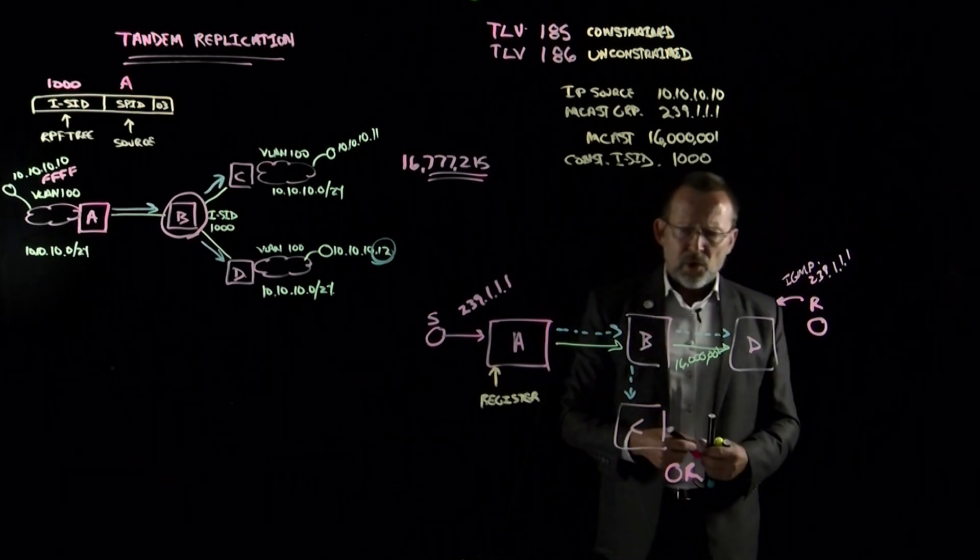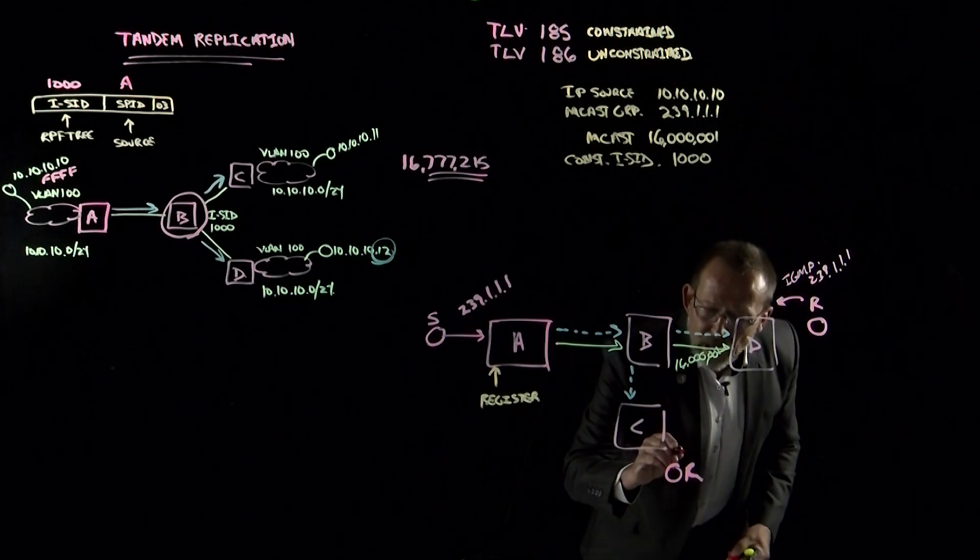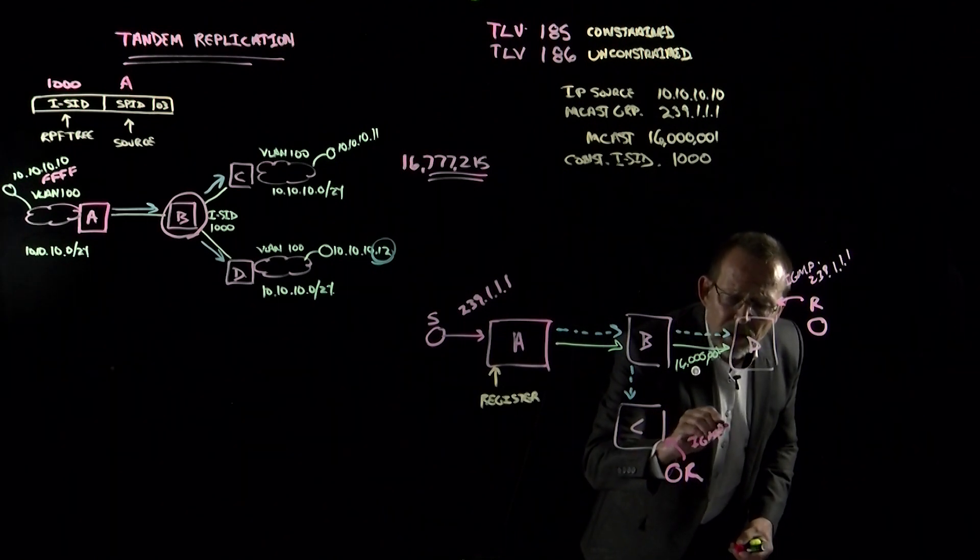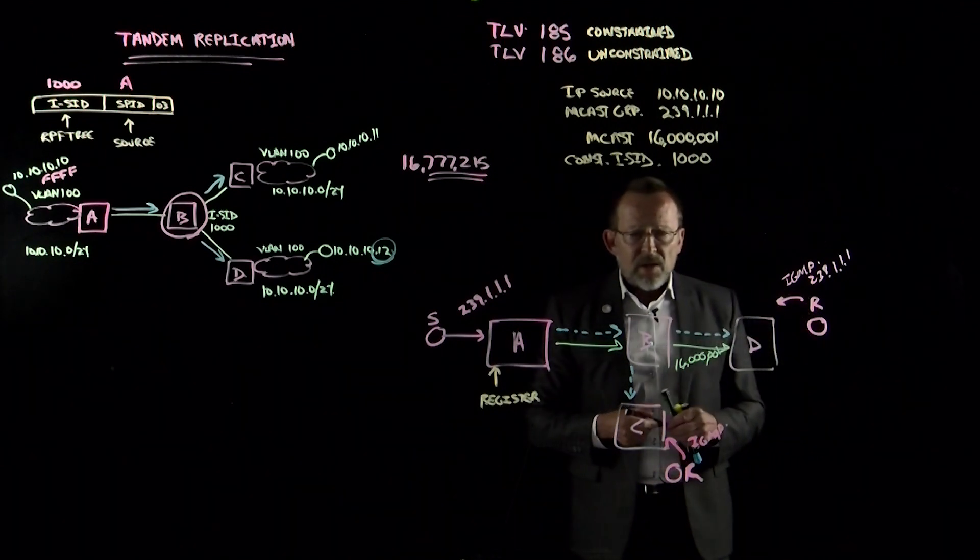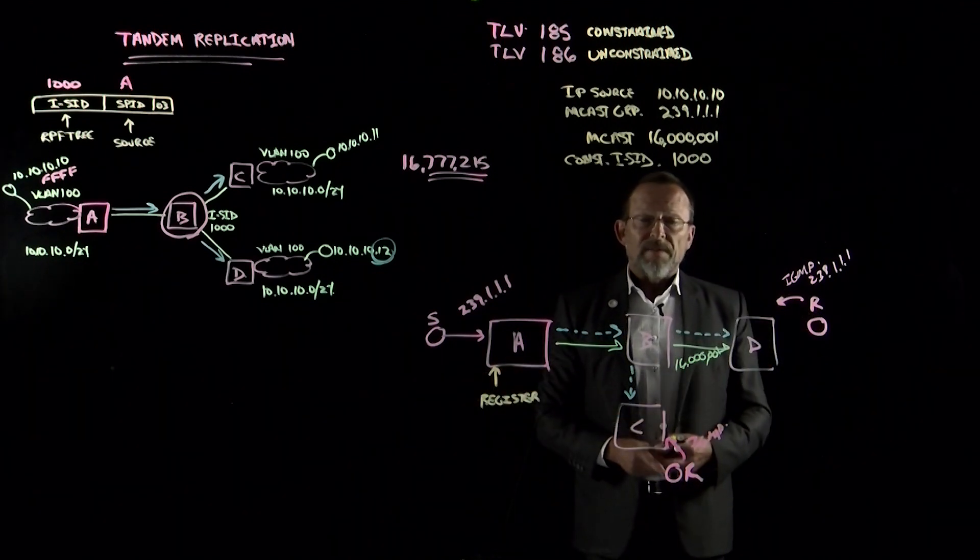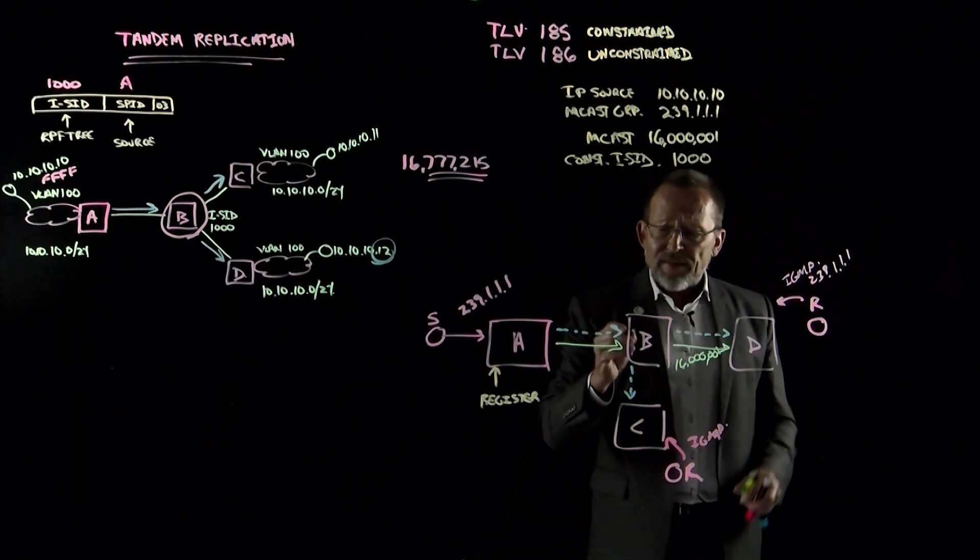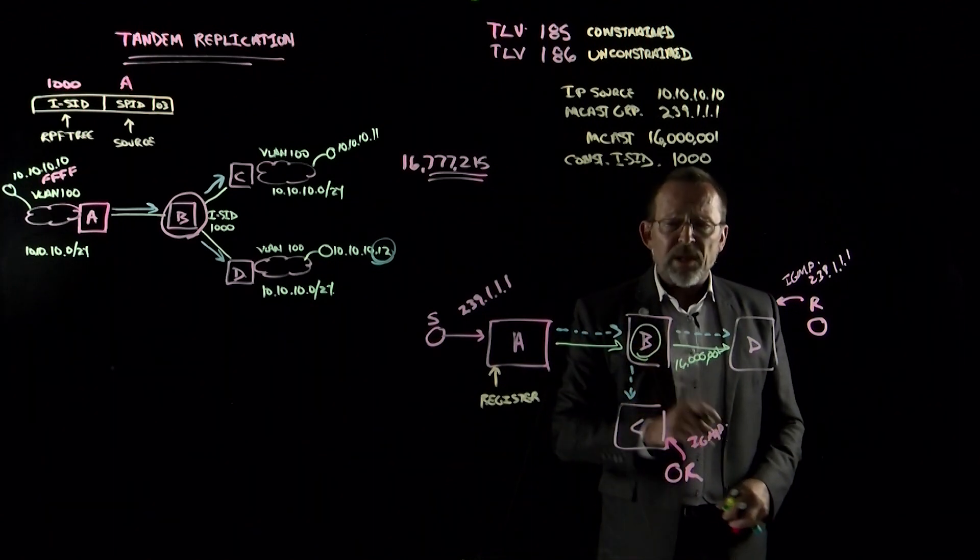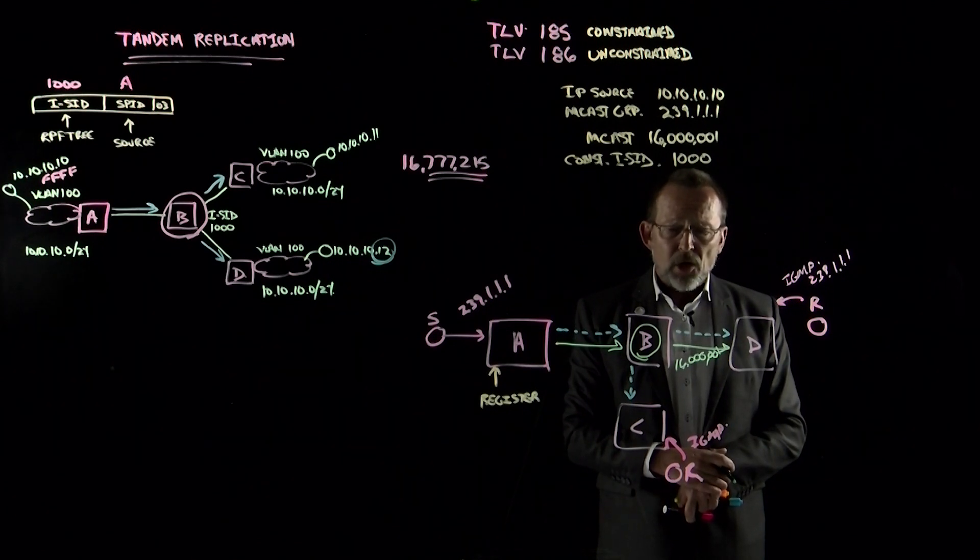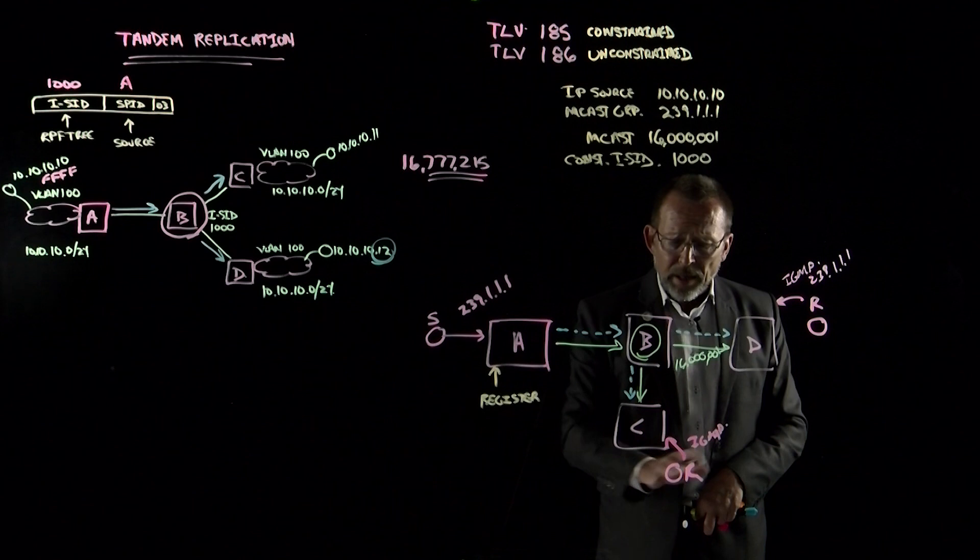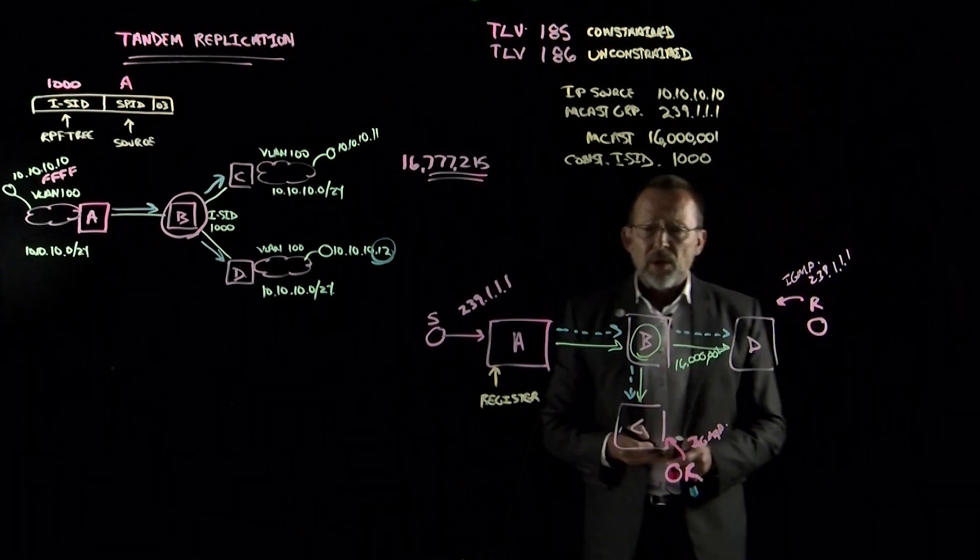Now let's say we have another user that actually makes the IGMP request for the same multicast group. Obviously, the same litmus test has to happen. Are you part of ISID 1000? If the answer is yes, then B would have enough knowledge to say, I need to be the one to do the tandem replication. Therefore, I will replicate ISID 16,000,001 and provide it to that user community.